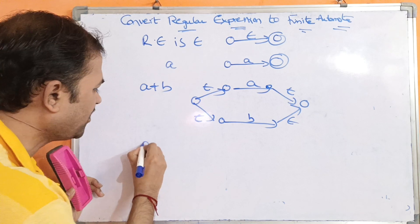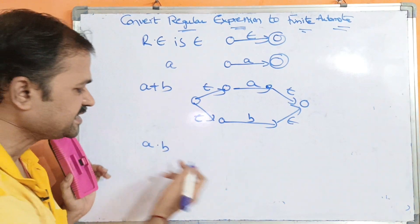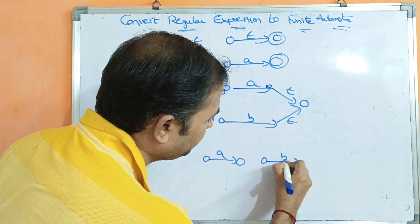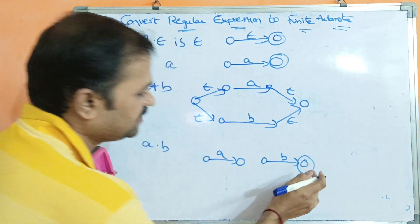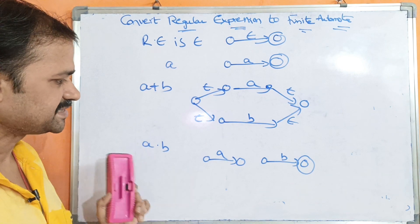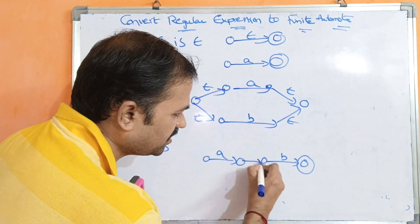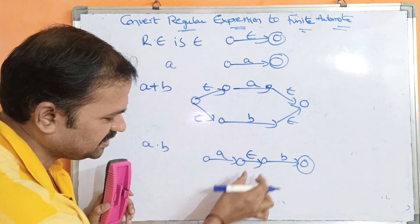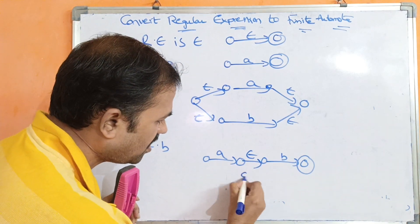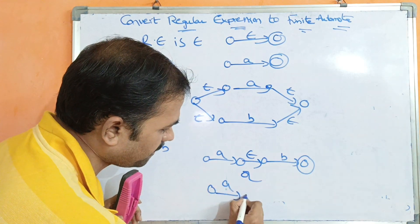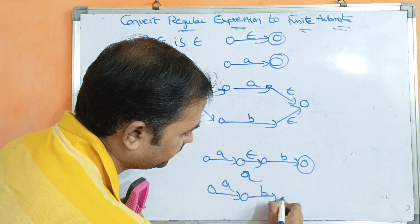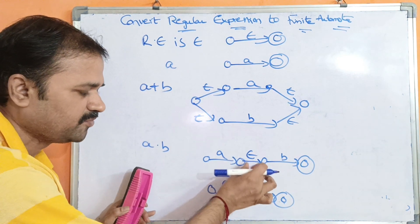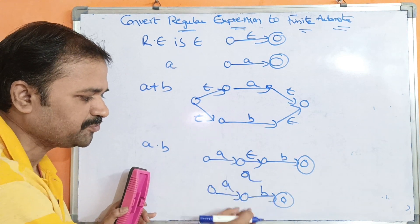Next, consider A dot B. For representing A we require two states, and for representing B we require two more states. Let the last be the final state. This is a concatenation operation. Between them we apply epsilon, or we can concatenate these two into a single state — either approach works, there is no problem.